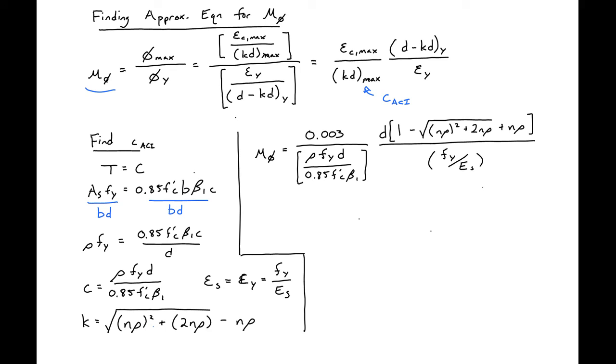Now we can plug all of these expressions into our moment curvature expression above. Substituting in all our values gives us this expression where our curvature ductility equals 0.003 over our c expression, times (D - KD) where we substituted in our expression for K, divided by our yield strain.